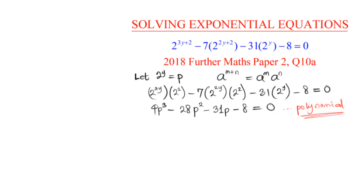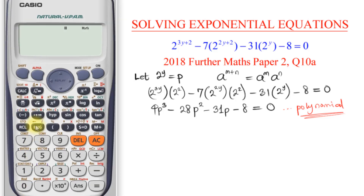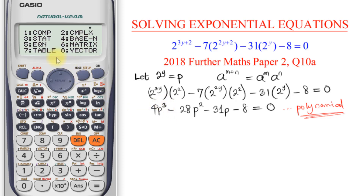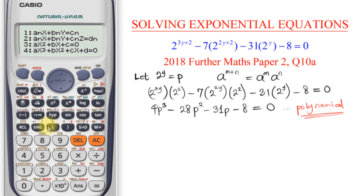Now this is a polynomial equation we can solve with the calculator. I press Mode 5 to enter equation mode, which will help solve this type of question. I press 5, and looking at the options, the equation is degree 3, so I select option 4 which corresponds to degree 3.